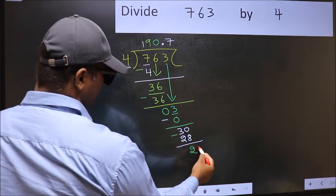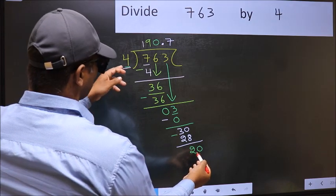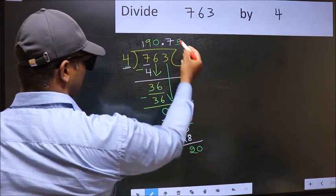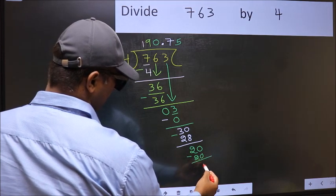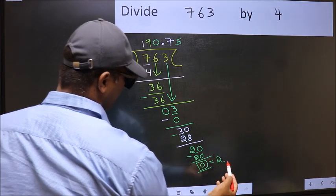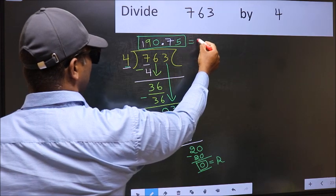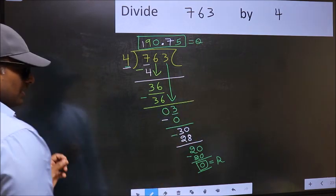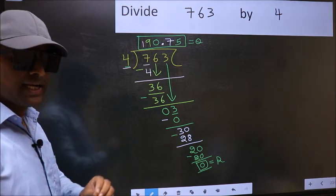We already have decimal. So directly take 0. When do we get 20 in 4 table? 4 fives, 20. Now you subtract. You get 0. So this is your remainder and this is our quotient. Did you understand where the mistake is? You should not do that mistake.